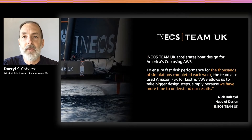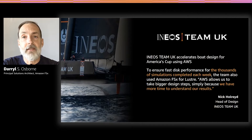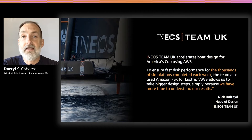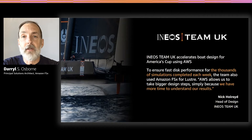One of our customers, INEOS Team UK, uses several AWS HPC services including FSx for Lustre, Elastic Fabric Adapters, and C5N compute instances to run thousands of simulations during the design process of their boat foils. This is a great example of computational fluid dynamics. The team chose S3 as their primary data store and augmented their storage performance by using FSx for Lustre to provide lower-latency file operations. The ability to run workloads faster allowed them to iterate on their design more frequently.